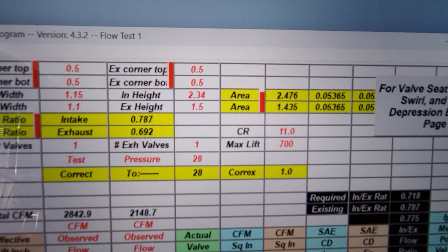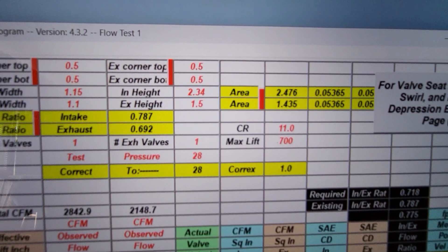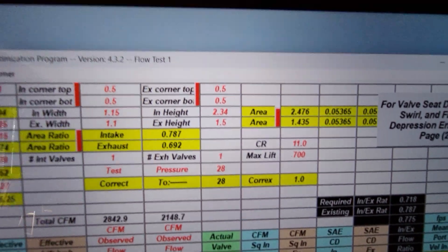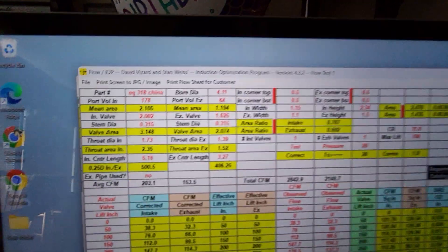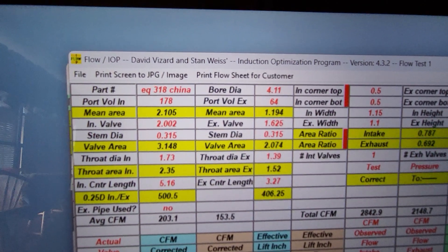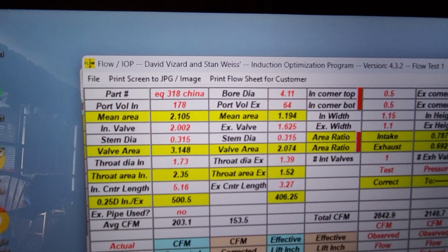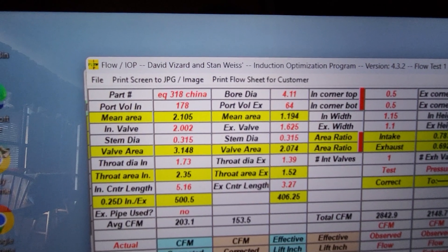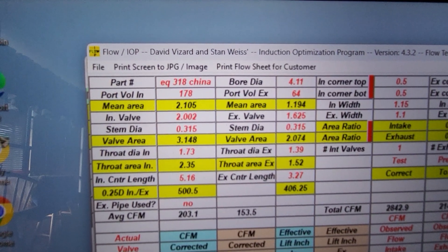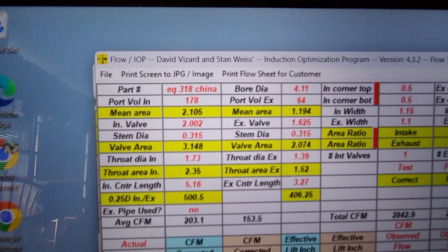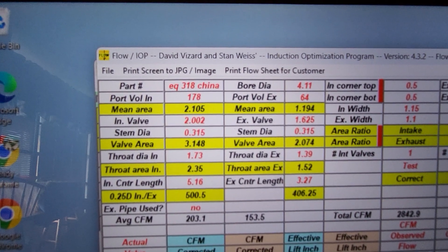If I change that right now it'll lock the program up and it won't do calculations, so we're going to leave it at 0.7 and pressure ratios at 11. Our outputs have probably come out a touch higher than they really are. Our port volume is 178, valve was 2.002, stem is 315, throat 1.73.